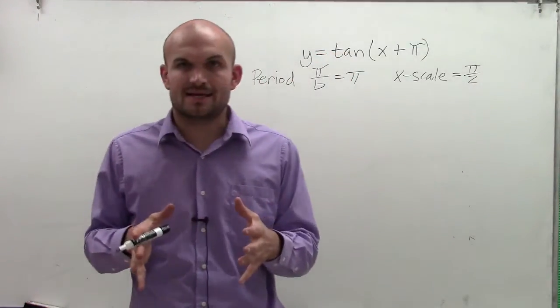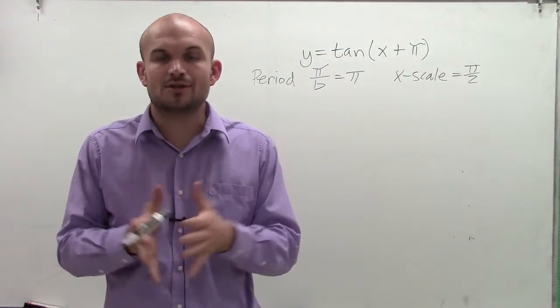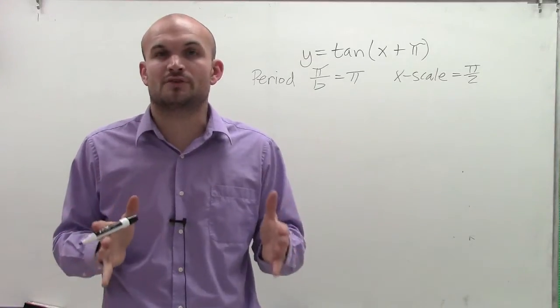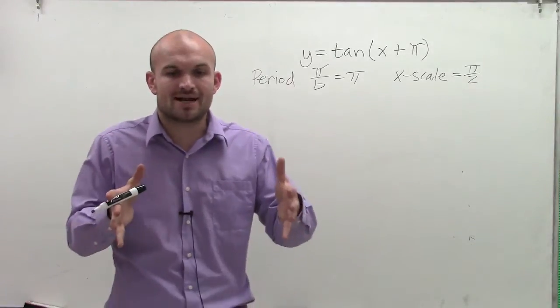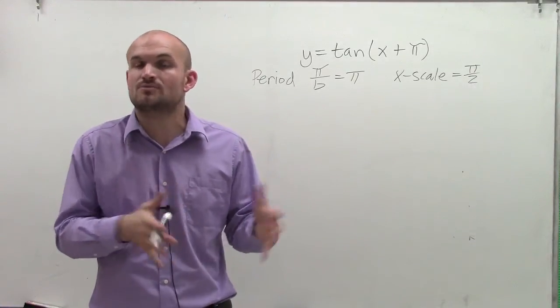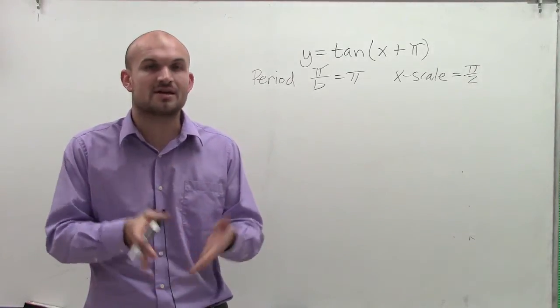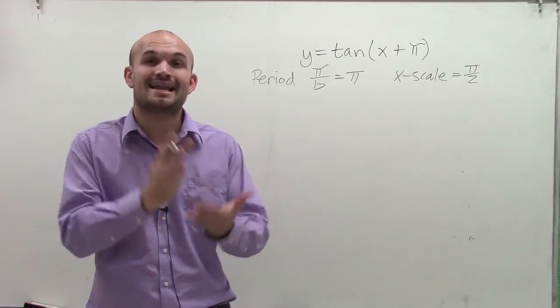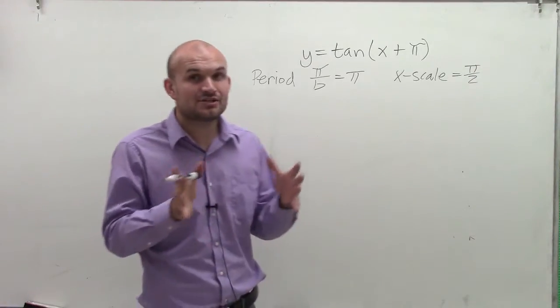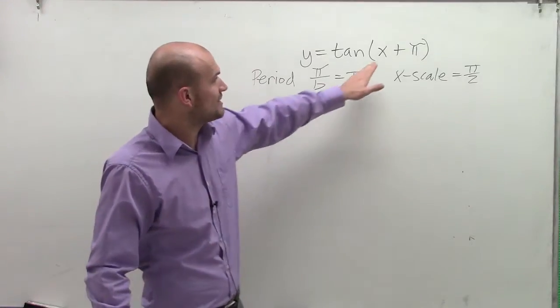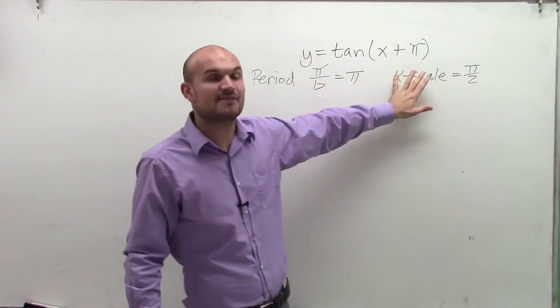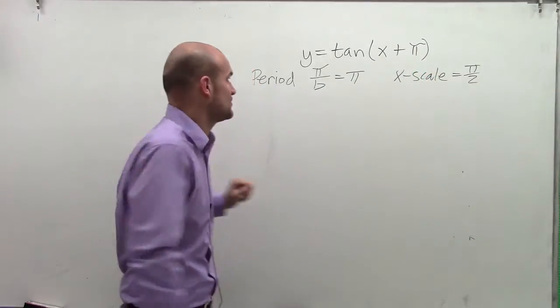Now the next thing is, since we know we have a phase shift, I want to look at what is the initial period of the graph. The initial period of the tangent graph starts at negative pi halves and ends at pi halves. So for any transformation, the graph is going to affect the start and the end. I see I have x plus pi, and that's going to affect my start and end of my tangent graph.